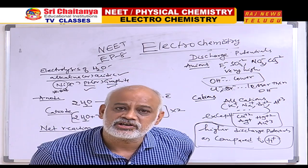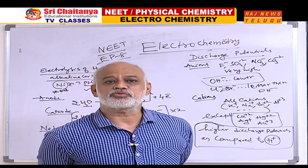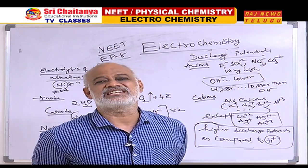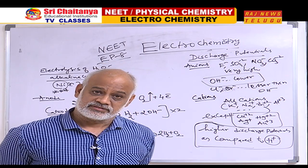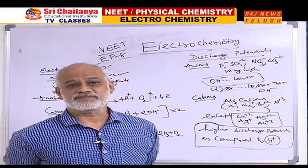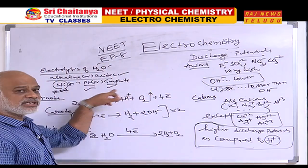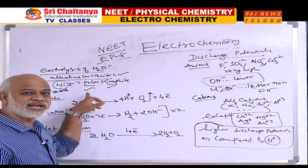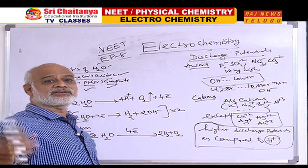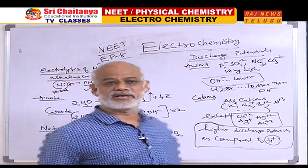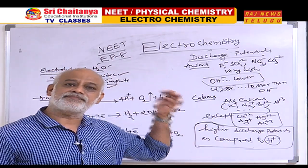When we talk about electrolysis of water, sometimes you may have to take aqueous NaOH or KOH — frankly speaking, just a few drops. The inert electrodes that are generally employed are platinum or graphite. Platinum electrodes being costly, graphite electrodes are preferred.